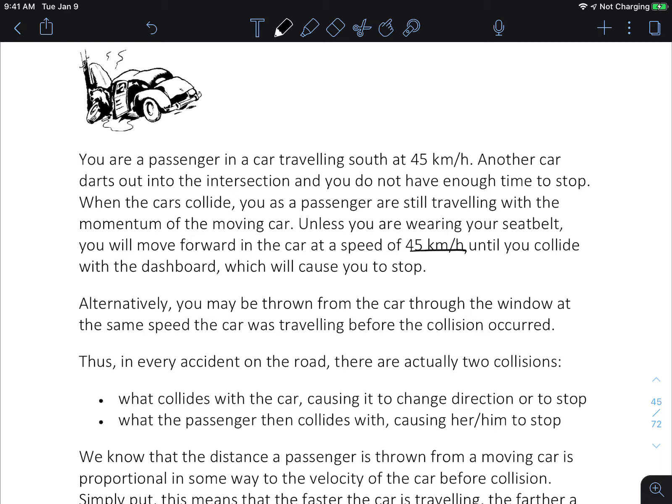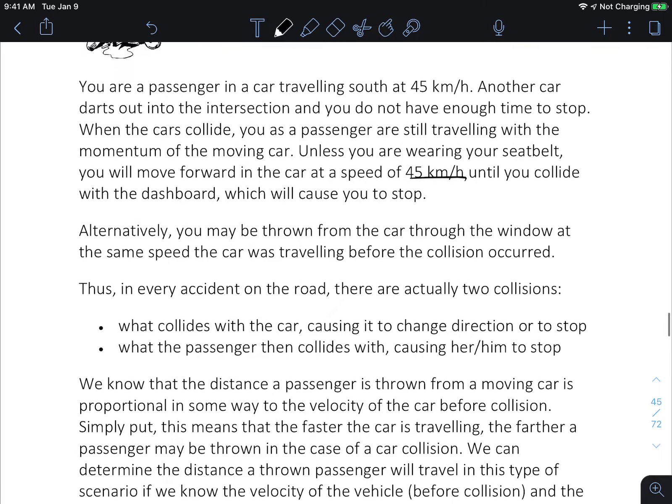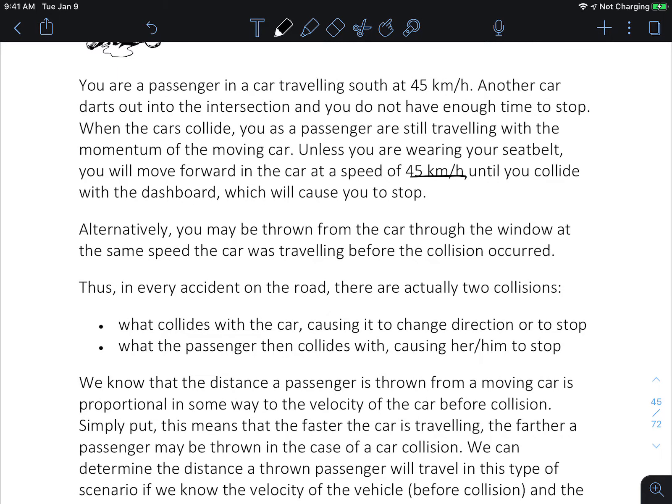Alternatively, you may be thrown from the car through the window at the same speed the car was traveling before the collision occurred. Thus, in every accident on the road, there are actually two collisions: the collision where the car collides causing the change in direction or the stop of the car, and then the passenger collision—the second collision—where does the passenger go, what causes them to stop?